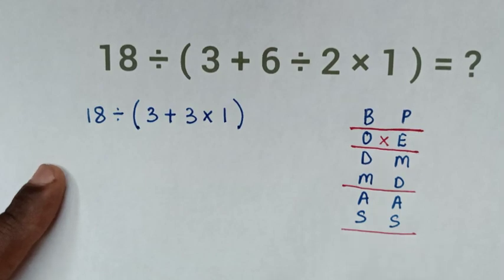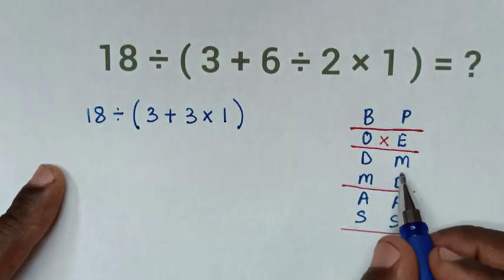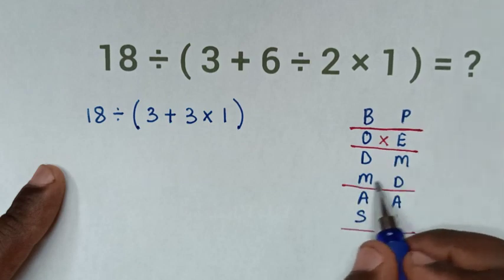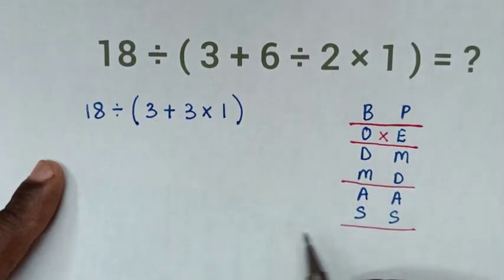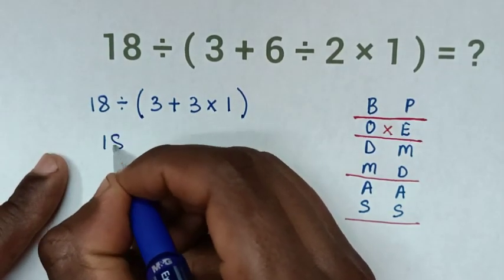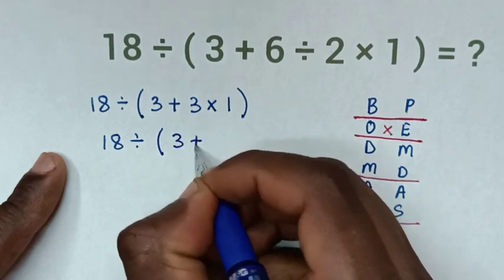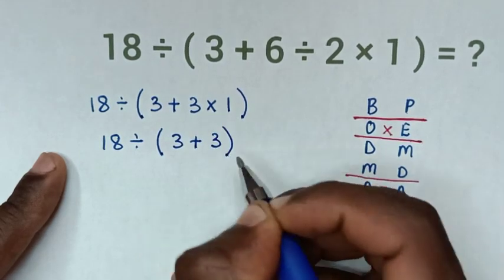Then, in the next step, we'll deal with this multiplication. After we finish this step of dealing with multiplication, we'll leave this addition. So, it will be 18 divided by bracket, 3 plus 3 times 1 is 3 bracket.